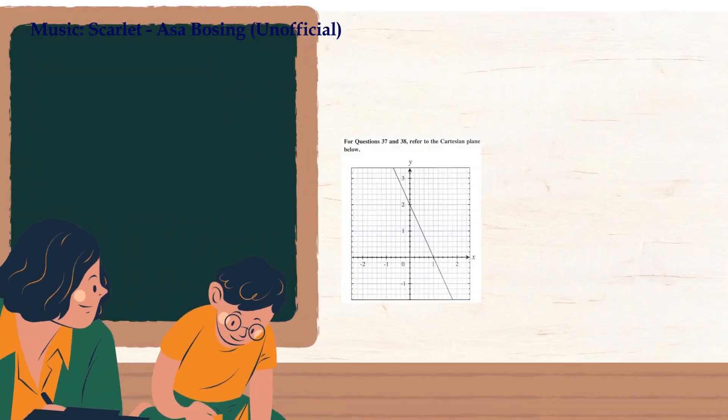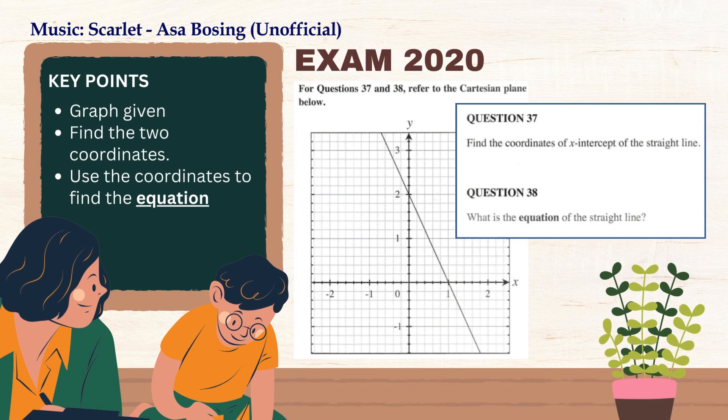Let's have a look at 2020 exams, question number 37 and 38. Here the two questions are asking us to first find the two intercepts, the x and y intercepts, and then find the equation of the straight line using the coordinates of the two intercepts. From our analytics, we have identified that there are three important points to consider when answering or doing exam preparations.